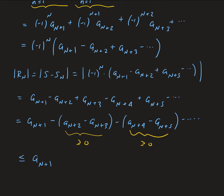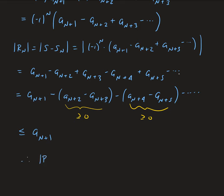So the residual is bounded by the (n+1)th term — that's the alternating series remainder result. We can also use this to determine the number of terms required to approximate a series given a specific error. I'm going to do a couple of videos on those applications.